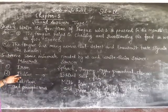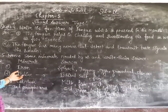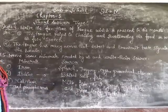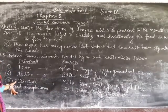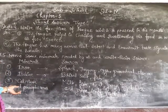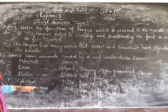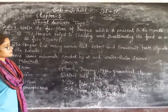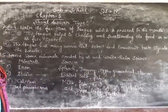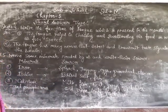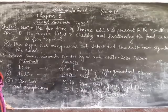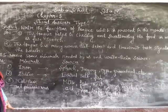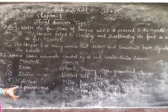Next, iodine mineral: source is salt. Next, calcium and phosphorus: the sources include fish, meat, green vegetables, and green leafy vegetables. Salt is also a source of phosphorus.